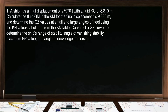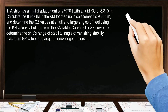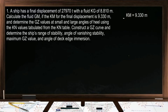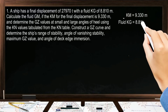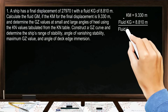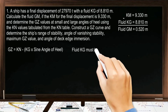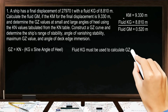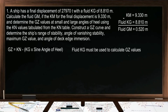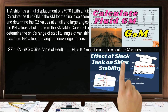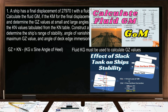The first step is to find the fluid GM. The KM is 9.330 meters minus the fluid KG of 8.810 meters, giving a fluid GM of 0.520 meters. Fluid KG must be used in calculating the GZ values since it has been corrected for free surfaces due to slack tanks. If you are not familiar with how to calculate the fluid KG and apply free surface correction due to slack tanks, kindly check the link in the description for this video.